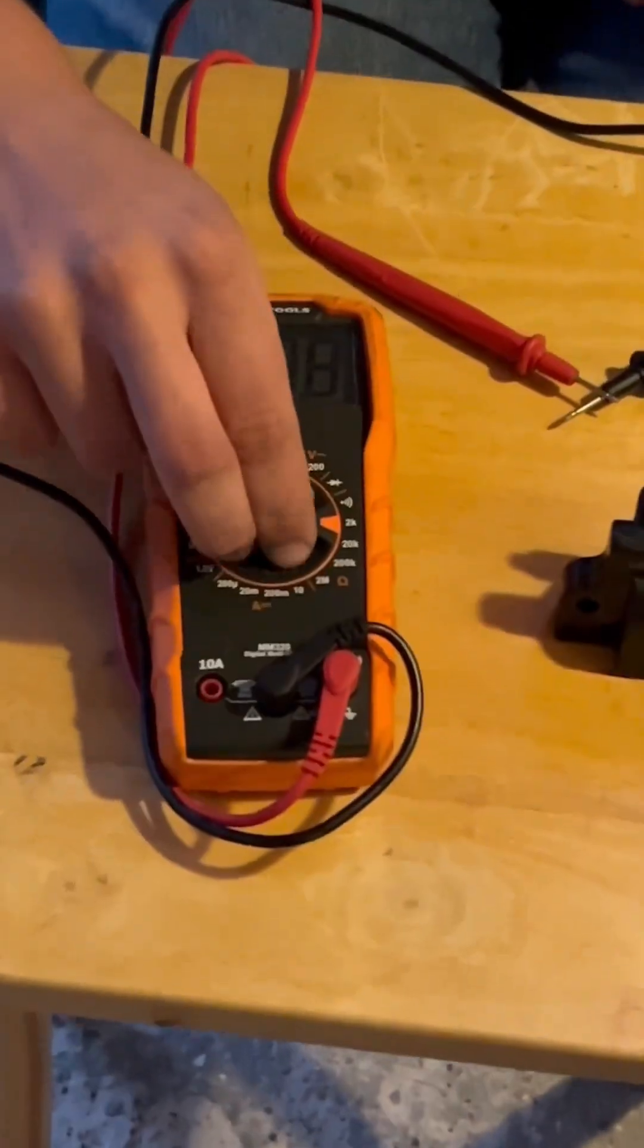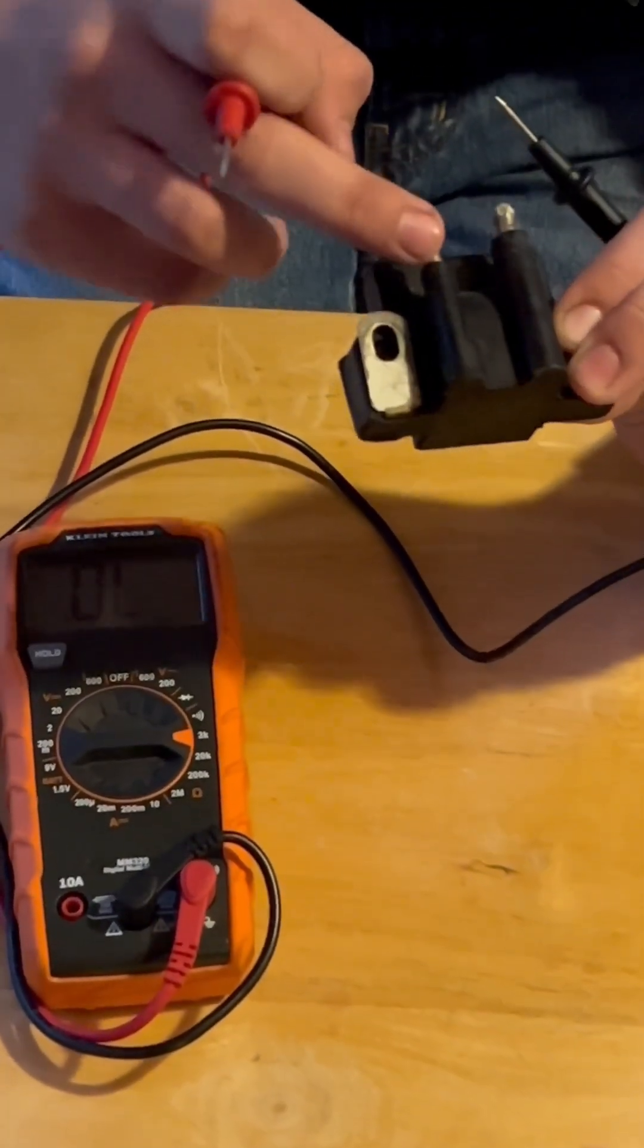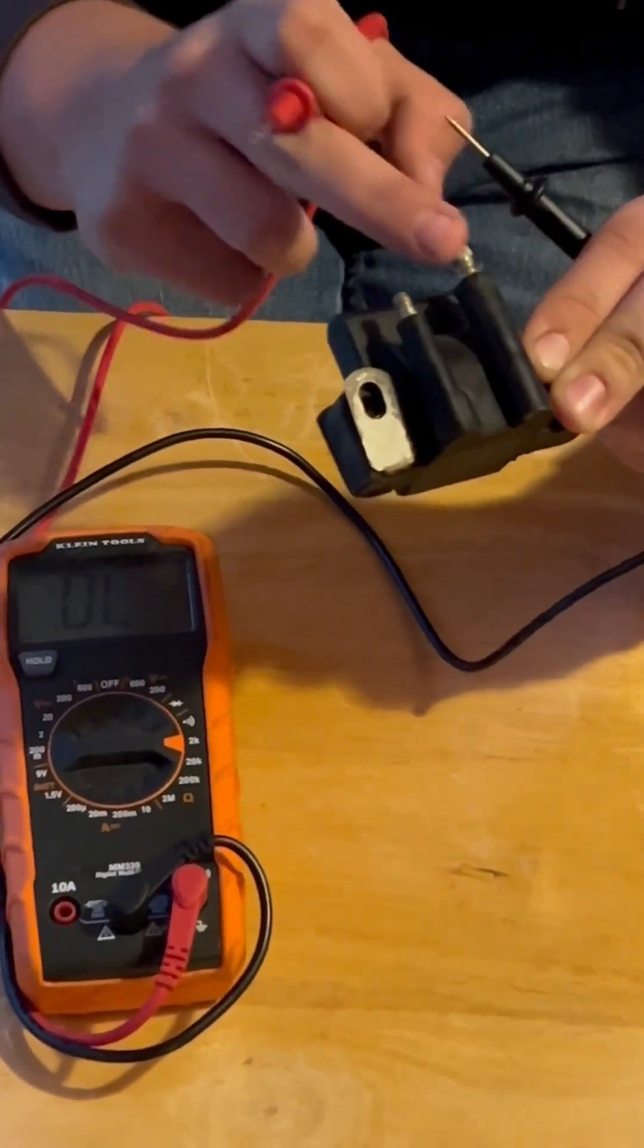I'll be turning it to the ohm setting, just 2k. This here is the ground. This is the primary and this is where the spark plug wire goes.